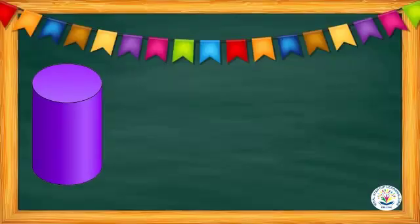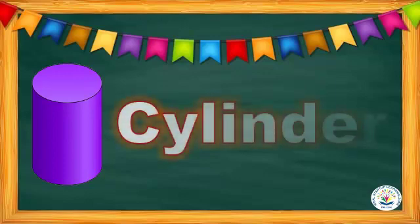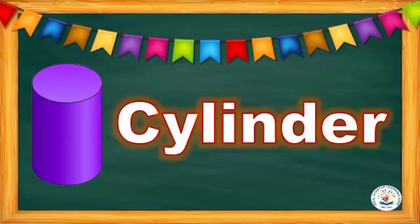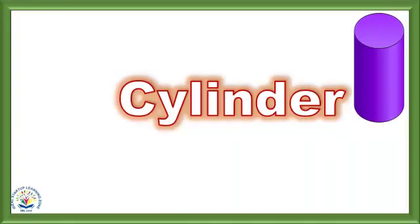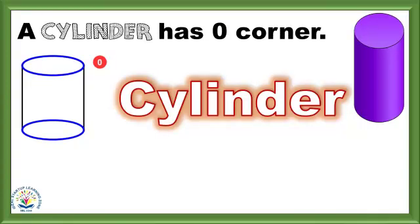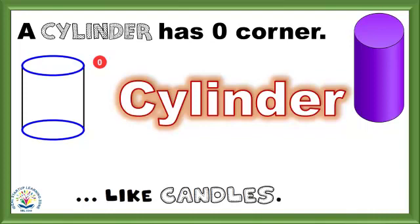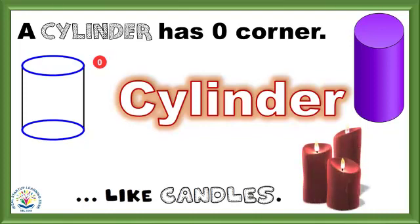What shape is this? Yes, it is a cylinder! C-Y-L-I-N-D-E-R. Cylinder. Say with me: cylinder! A cylinder has zero corners, and a cylinder looks like candles.